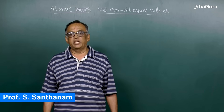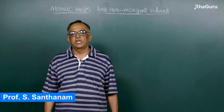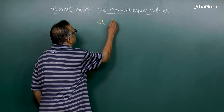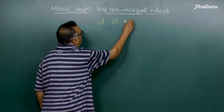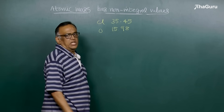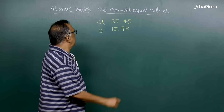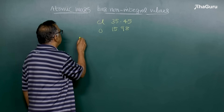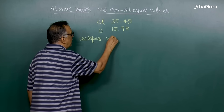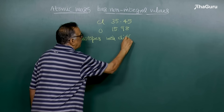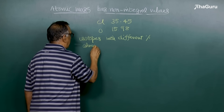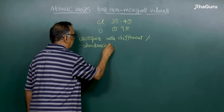Atomic mass of an element has non-integral values. If you look at the atomic mass table, most of the elements have non-integral values — for example, chlorine 35.45, oxygen 15.99 or 16. The atomic mass has non-integral values due to the existence of isotopes with different percentage abundance or availability.